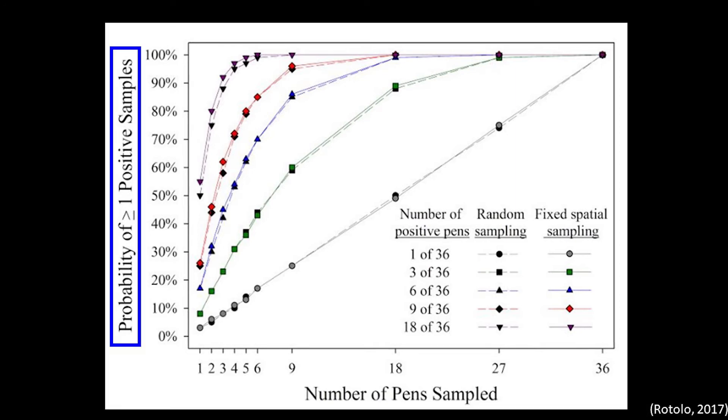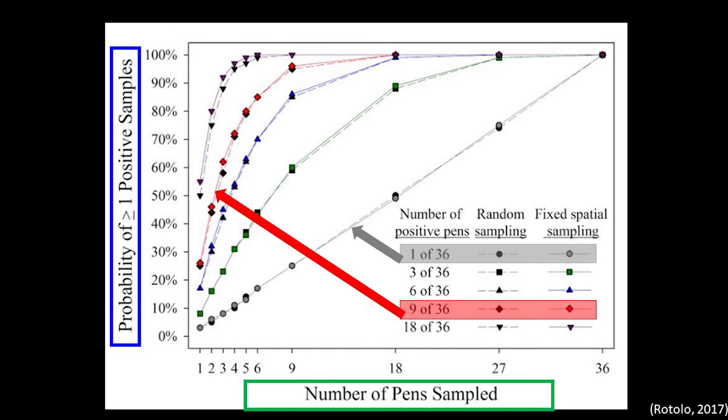The y-axis represents the probability of detecting one or more positive pens. The x-axis represents the sample size or number of oral fluids collected in one barn. The different colored lines represent varying disease prevalences. For example, the gray line with circles represents the probability of detection in a barn where only one pen is infected with the disease of interest, whereas the red line with diamonds represents the probability of detection in a barn where nine pens are infected.